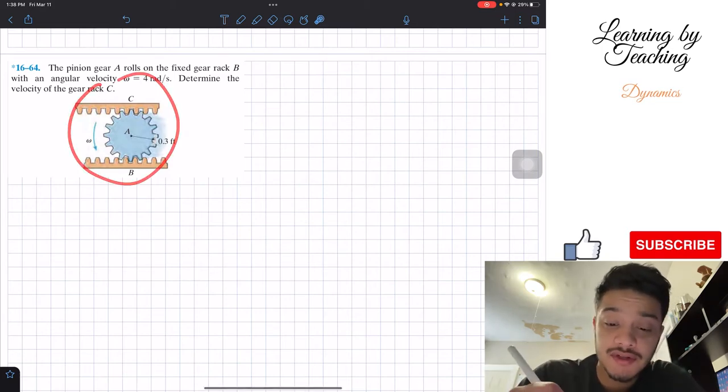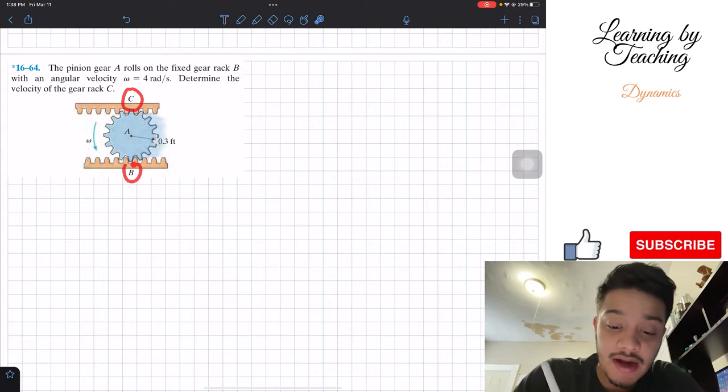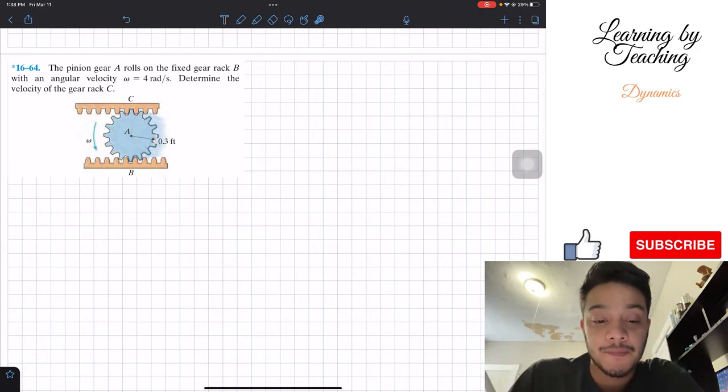What we see in this picture, we got two racks, rack C and rack B, and in between them we have the pinion gear that is rotating at this omega angular velocity of 4 radians per second.